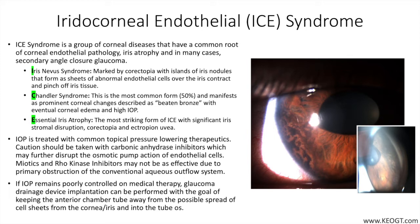As iris changes progress, slit lamp examination may reveal correctopia, which is displacement of the pupil from normal position; ectropion uvae, which is anterior exposure of the posterior pigmented part of the iris; and iris atrophy. Gonioscopy may reveal peripheral anterior synechia, or PAS, described as high and with connections going anterior to Schwalbe's line, and iris surface changes linked to contraction of the sheets of migrating cells.